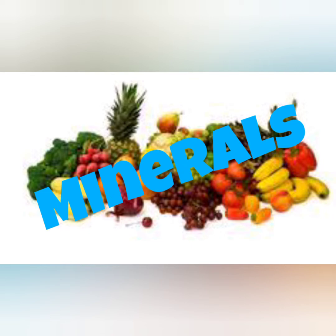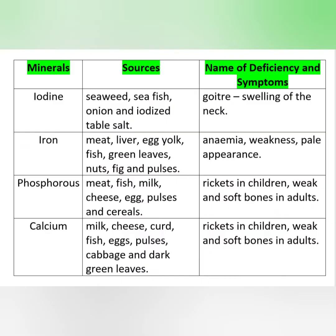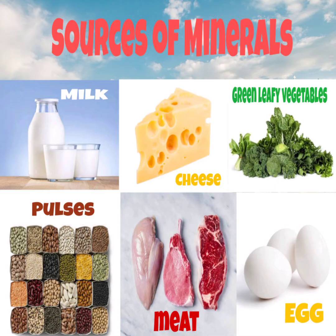The next nutrient is minerals. We studied that vitamins and minerals are protective food because they protect us from diseases and keep us healthy, but we need these two in small quantities. Rich sources of minerals are milk, cheese, green leafy vegetables, pulses, meat, and egg.